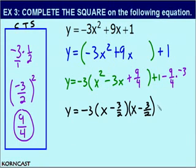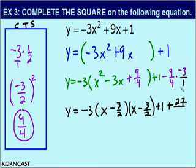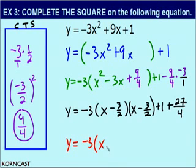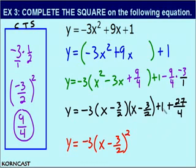Now to simplify, we're going to add 1 to our product. Recalling how to multiply fractions: negative 9 times negative 3 is positive 27, divided by 4 times 1, which is 4, giving us 27 fourths. Finally, I'm going to rewrite x minus 3 halves times x minus 3 halves as x minus 3 halves squared. Now I need to add 1 to 27 fourths. We need a common denominator, so I rewrite 1 as 4 fourths. So 4 plus 27 is 31, and the common denominator is 4, giving us 31 fourths.